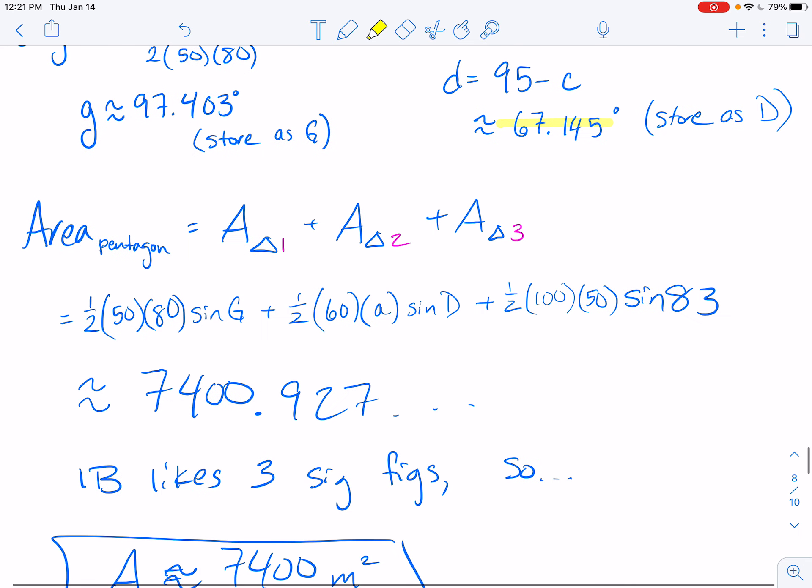So I just set that up using the formula area equals one half A, B sine C. And that's what I did three times. I just found two sides and the angle in between them. And I kept everything exact until this final moment so that I could not worry about rounding.